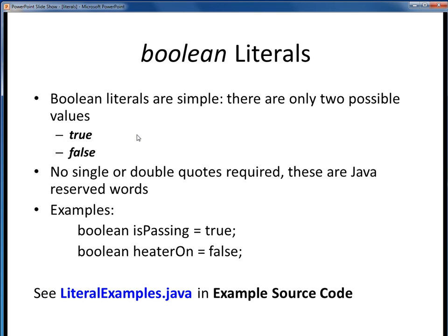The next type of literals are those for Boolean variables, and these are quite easy because there are only two possible values for them: true or false — the only two values a Boolean variable will accept. Notice that it's not necessary to have any single or double quotes around the literal true or false values. Those are just predefined Java reserved words.